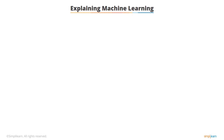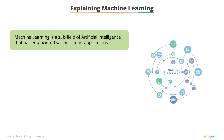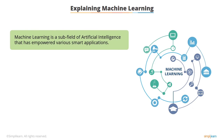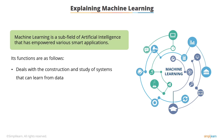Let's first understand what machine learning is. It is a subfield of artificial intelligence that has empowered various smart applications. It deals with the construction and study of systems that can learn from data. For instance, machine learning can be used in medical diagnosis to answer a question such as: is this cancer? It can learn from data and help diagnose a patient as a sufferer or not.